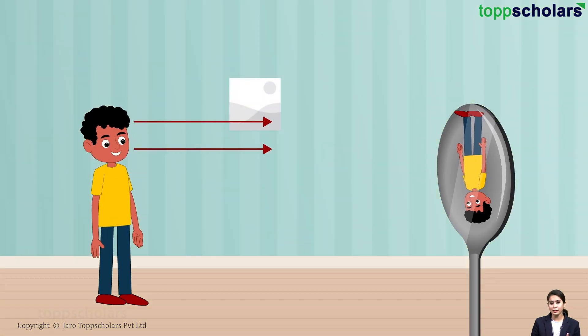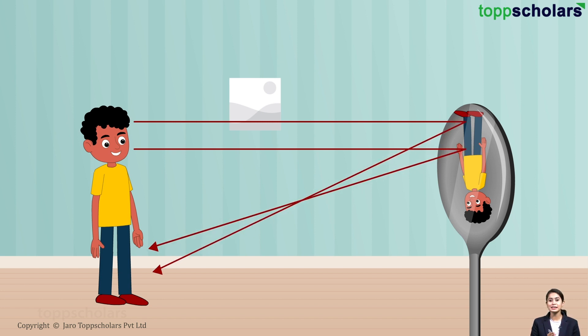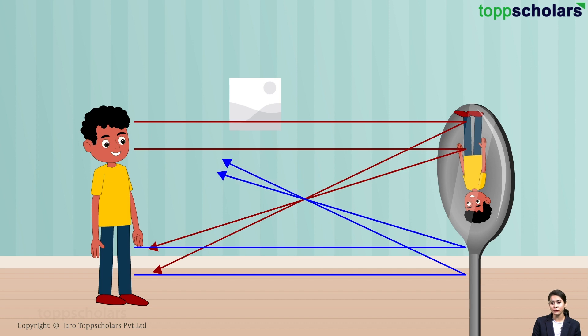When you see yourself in a spoon, the light rays from your head fall on the top of the spoon and get reflected downwards. While the light rays from your toes fall on the bottom of the spoon's curved surface and get reflected upwards.